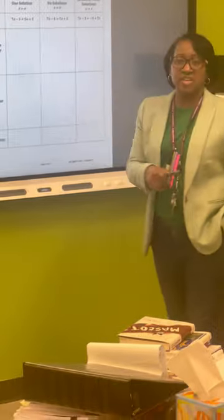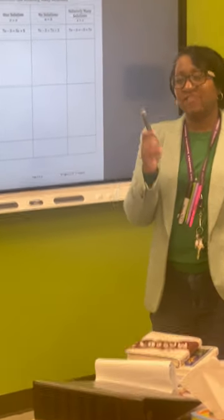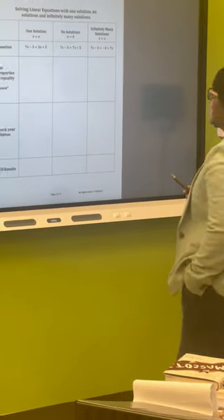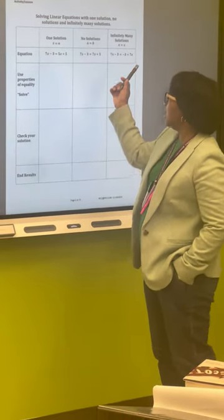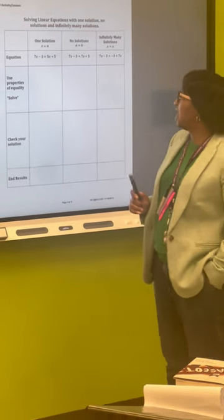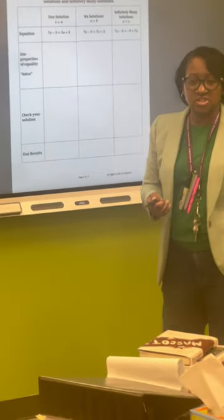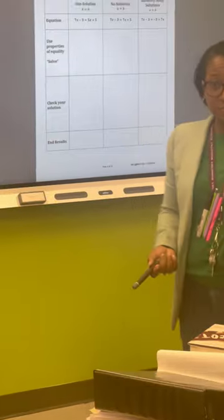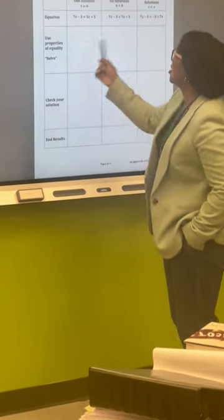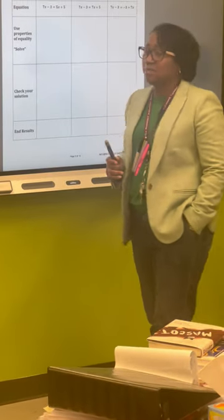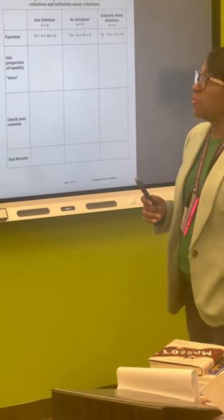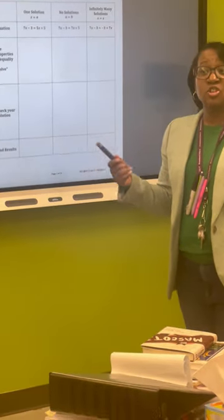We're going to practice solving each one of these. You all have already experienced finding one solution. We have three equations. Let's look at the first one: we have 7x minus 3 equals 5x plus 5. You have that on your sheet — everyone should be on that first column. We're going to talk about properties of equality and solve this. One of the properties we've been working on that you had to use to solve for one variable.